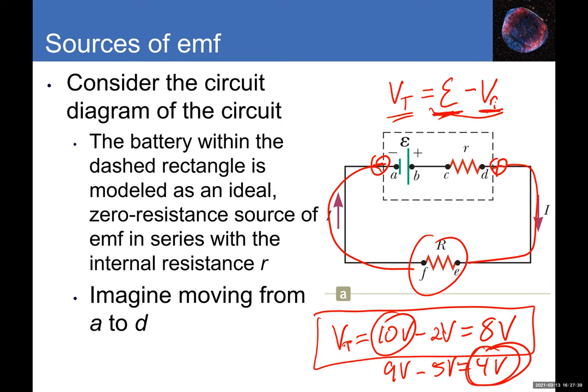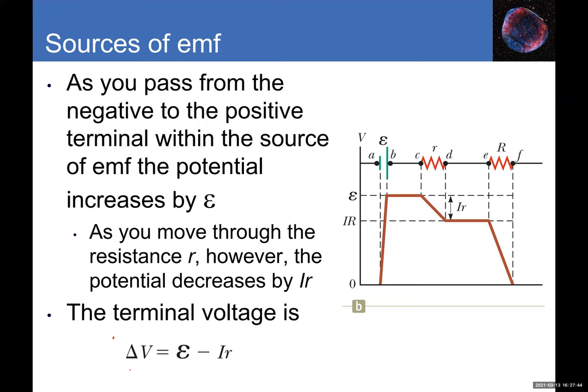The equation for terminal voltage is: Vt equals EMF minus I times r, where lowercase r is the internal resistance of the battery and I times r represents the voltage dropped across the internal resistor.